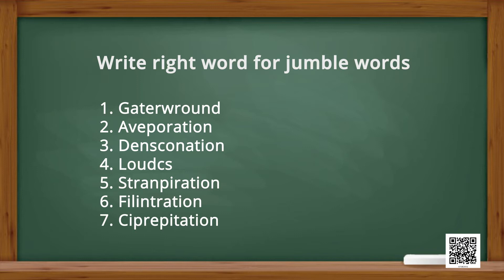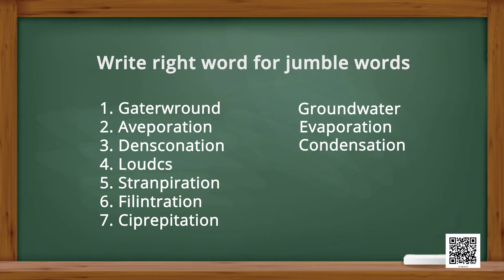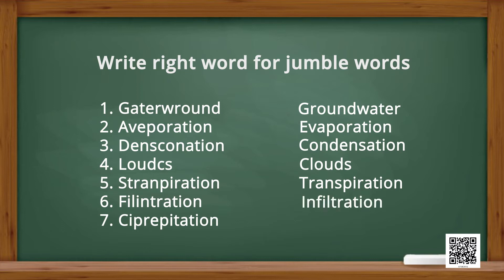Match these numbers with the processes given in the jumbled form. The processes are: groundwater, evaporation, condensation, clouds, transpiration, infiltration, and precipitation. All these processes are included in the water cycle.